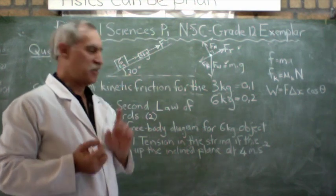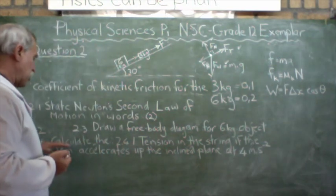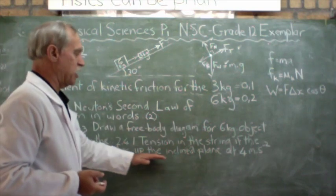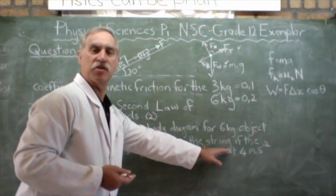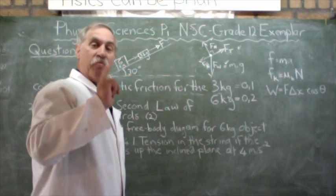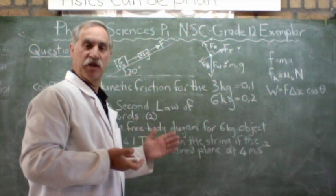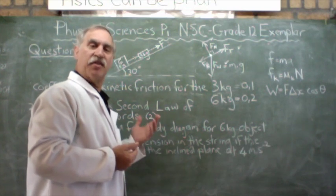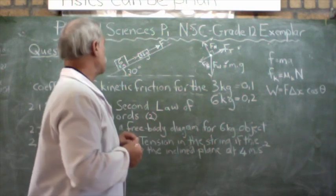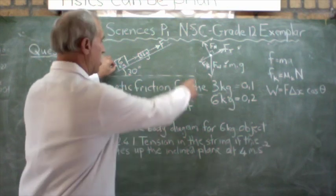Now, they're then asked to calculate the tension in the string if the system accelerates up the inclined plane at 4 meters per second squared. Now, it sounds a very difficult problem. And it is. It's worth 19 marks. So, 13% of their paper is solving this and the following question. So, it's not a giveaway of marks. But it is. The actual methodology is fairly easy. What the students have to realize, and this comes through working through the exemplar, is there's going to be a force of friction.